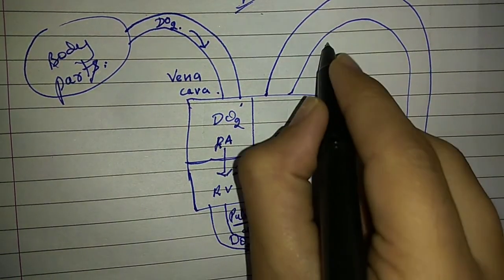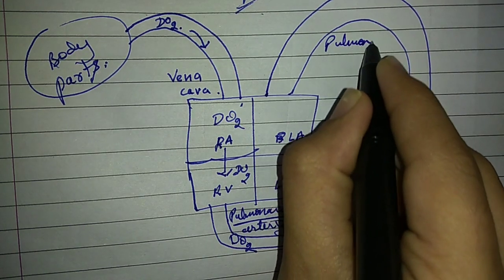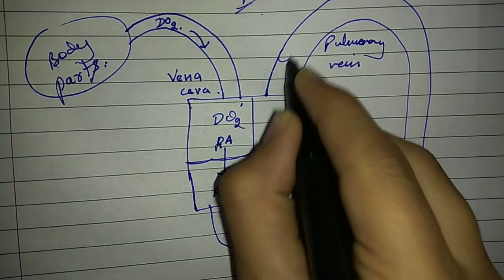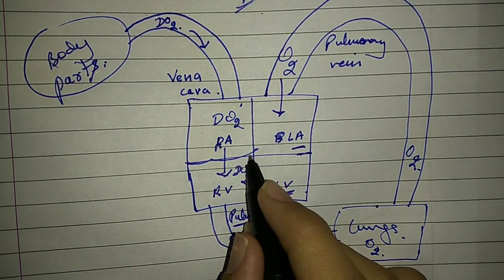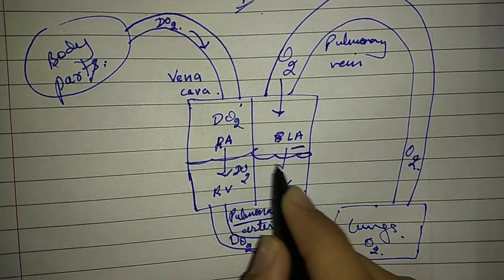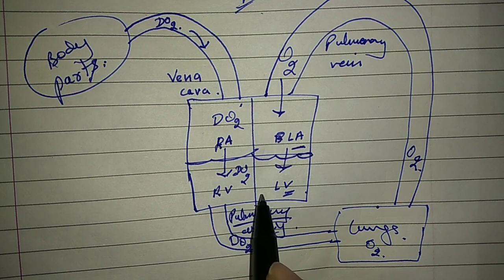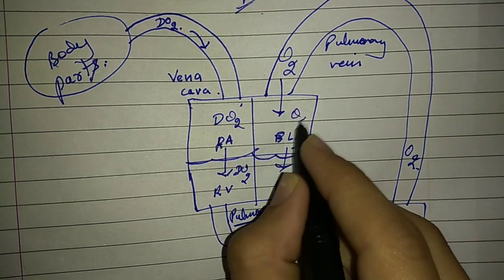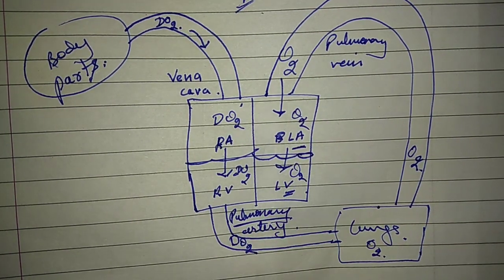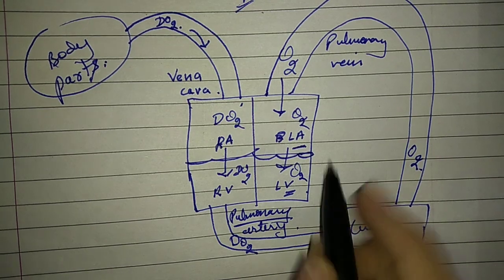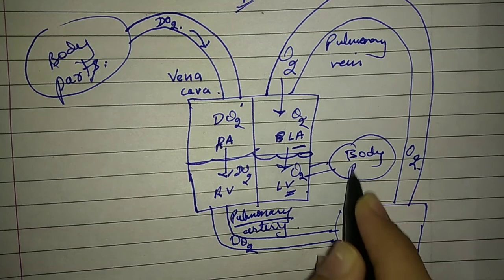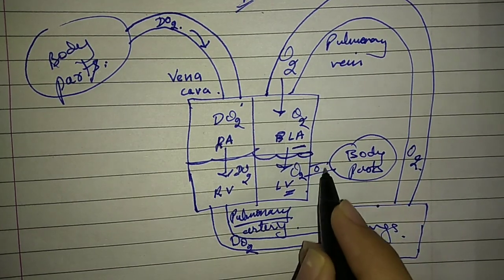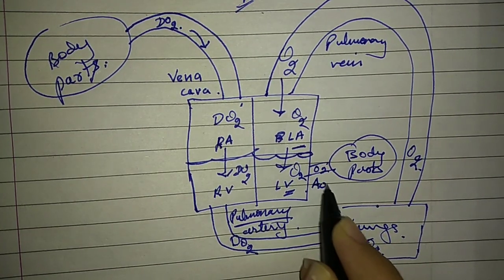Oxygenated blood comes to the left atrium through veins. From the left atrium, oxygenated blood flows to the left ventricle. From the left ventricle, oxygenated blood is sent to the body parts through an artery named the aorta.